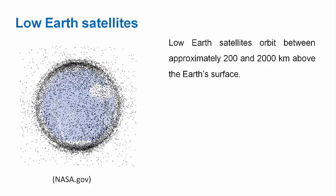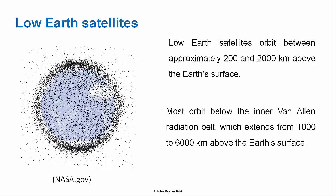Low Earth orbit satellites orbit between approximately 200 and 2,000 kilometers above the Earth's surface. You can see here a representation from NASA of the distribution of low Earth orbit satellites, most of which orbit below the inner Van Allen radiation belt.